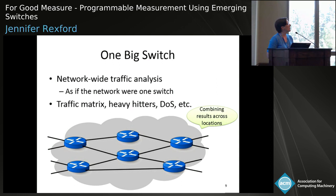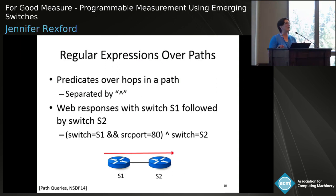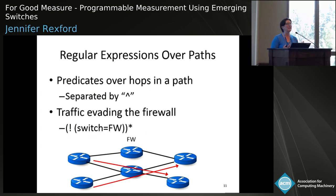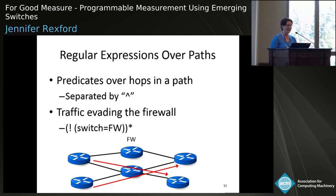This is really just a special case of a more general point: you might want to ask questions about the path traffic takes through the network as regular expressions over those paths. For example, I might want to know about all web client traffic with source port 80 that starts at switch 2 and ends at switch 1. A more sophisticated query for security: I want to know about all traffic in the network that doesn't go through a firewall — traffic that manages to evade the firewall switch is suspect, represented as a regular expression where switch not equal to firewall for every hop means the packet somehow evaded the intended security policy.